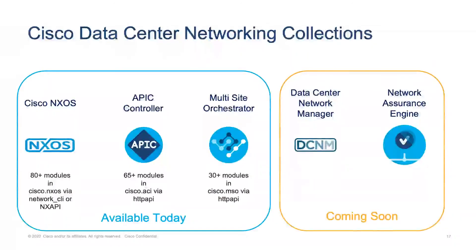Cisco has been working on a large portfolio of collections. Some are already available today as modules, but moving to 2.9 we need to provide them as collections, which also allows us to develop more and innovate more. We already have three collections published today: NXOS modules with more than 80 modules for talking to a specific switch outside of ACI; the Cisco.ACI collection for APIC controller modules with more than 65 modules using the APIC API; and the Cisco MSO collection for the multi-site orchestrator with around 30-plus modules. These live in different collection names so we can manage them separately.